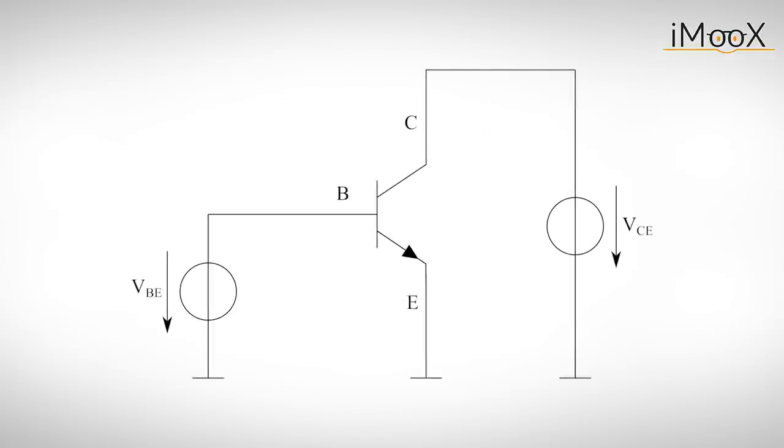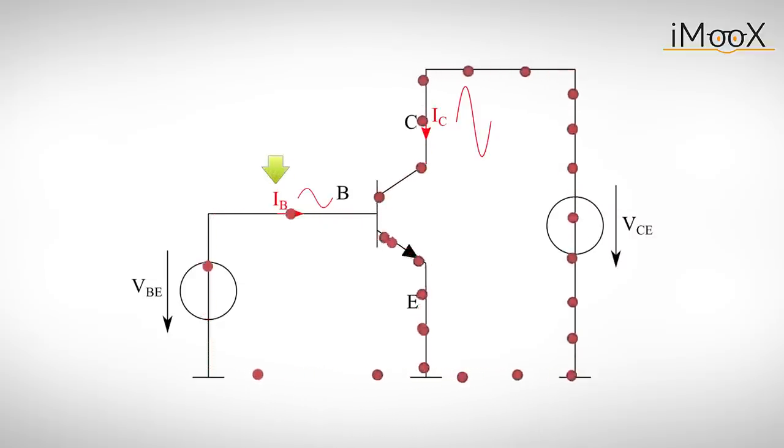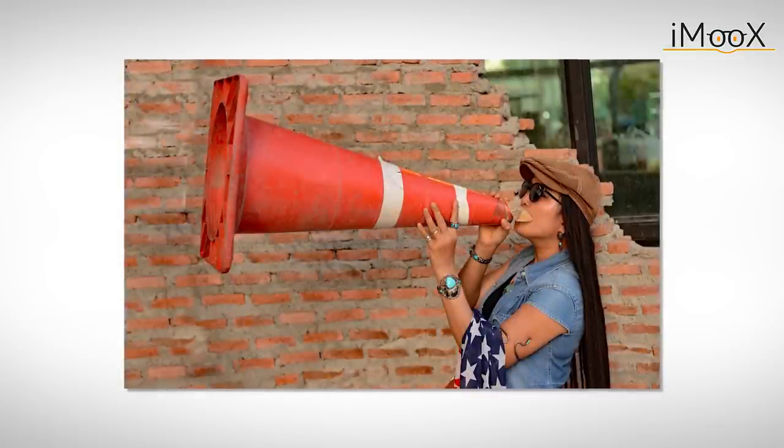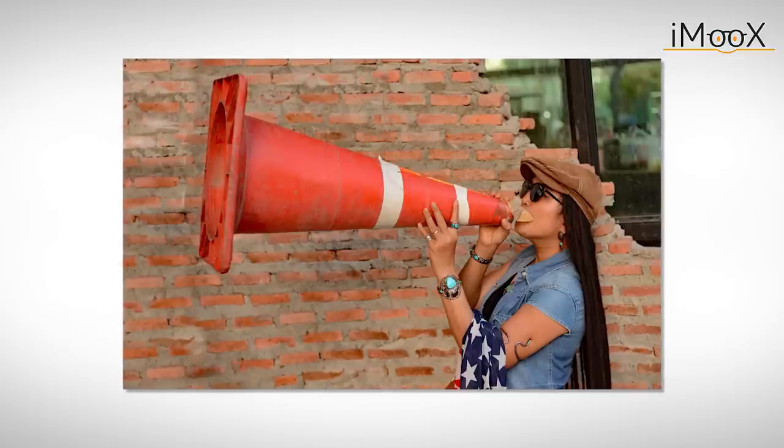If we build a circuit to operate the transistor in this configuration we can observe that the small current applied to the base leads to a large current between the collector and the emitter. If we now manipulate the base current in a certain range the other current will change proportionally but with much higher amplitude. An amplifier is born which much like a bullhorn can transform a small input signal into a large output signal.